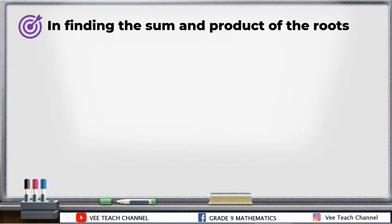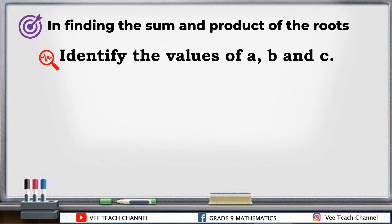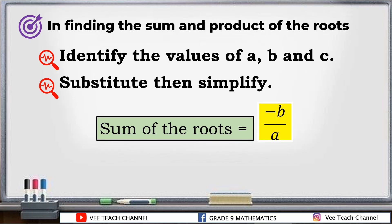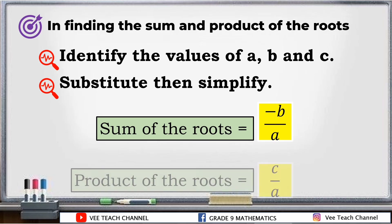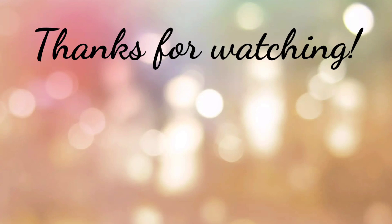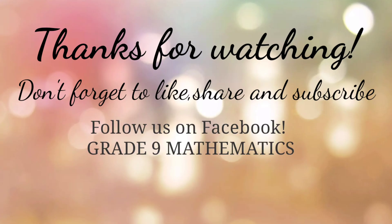To summarize finding the sum and product of the roots: first, make sure your equation is in standard form before identifying values of a, b, and c. After identifying the coefficients, substitute them into the formulas — sum of roots is negative b over a, and product of roots is c over a. Always remember to simplify your answer. That's it — see you on the next lesson, bye-bye!